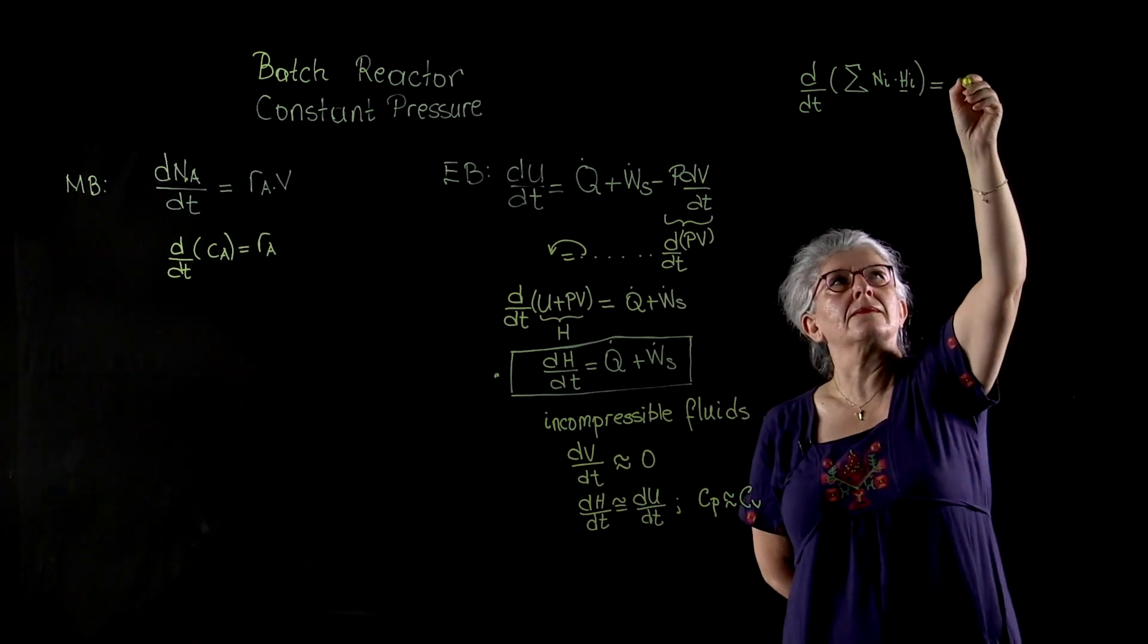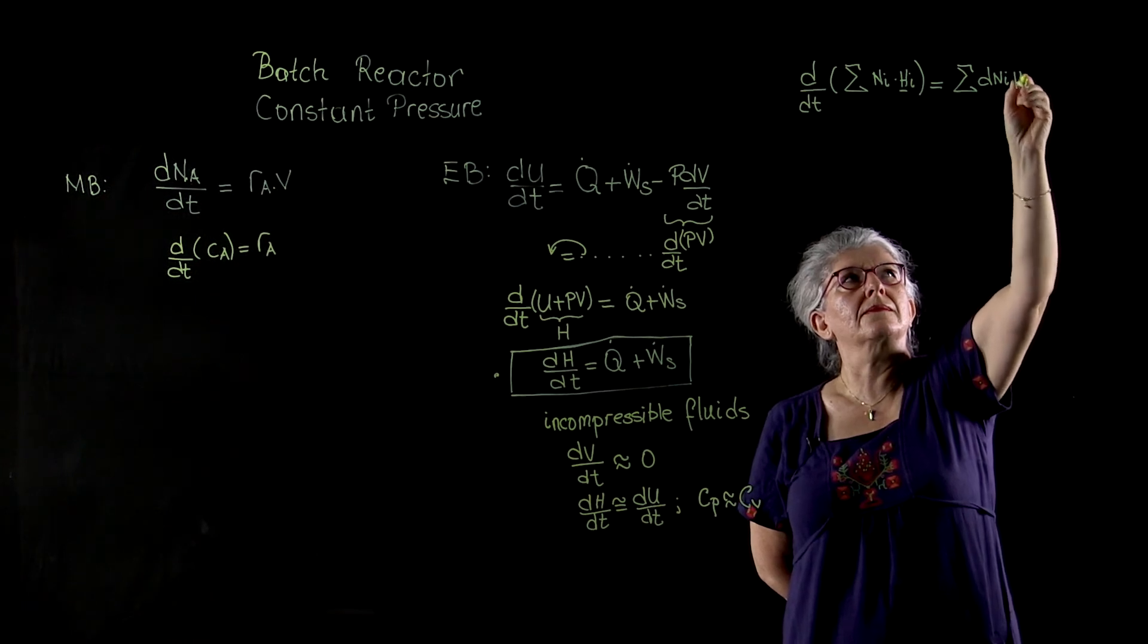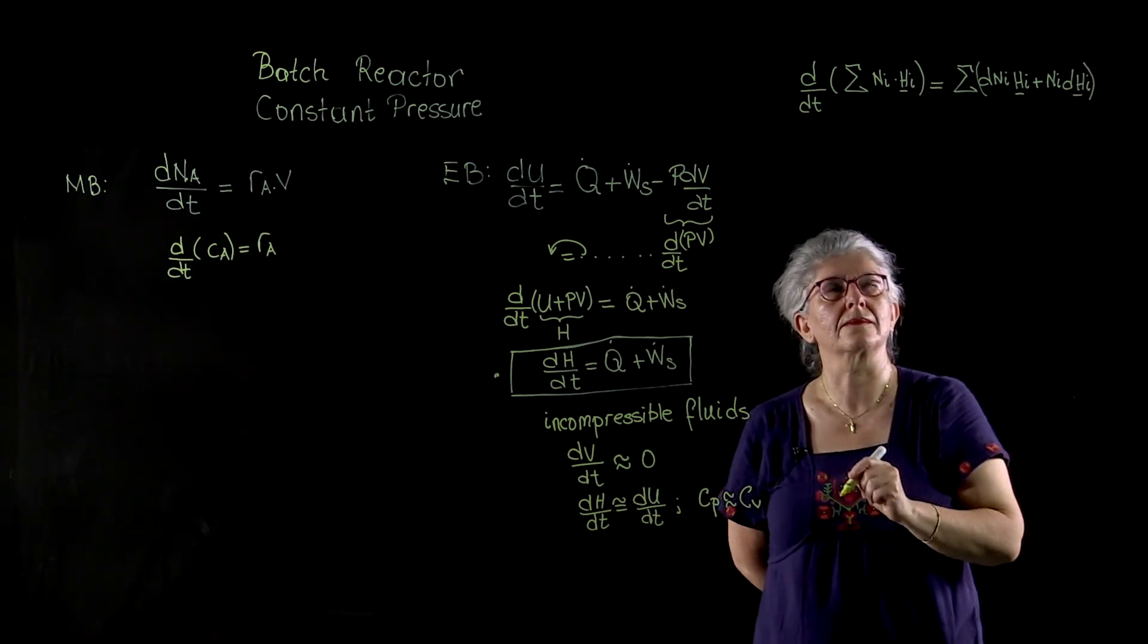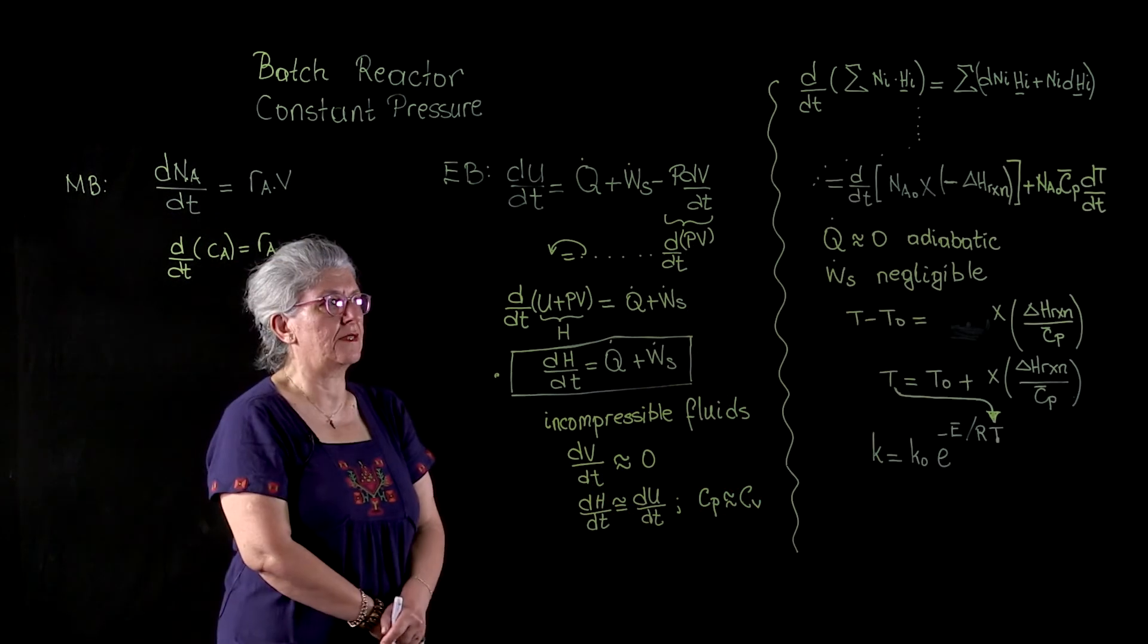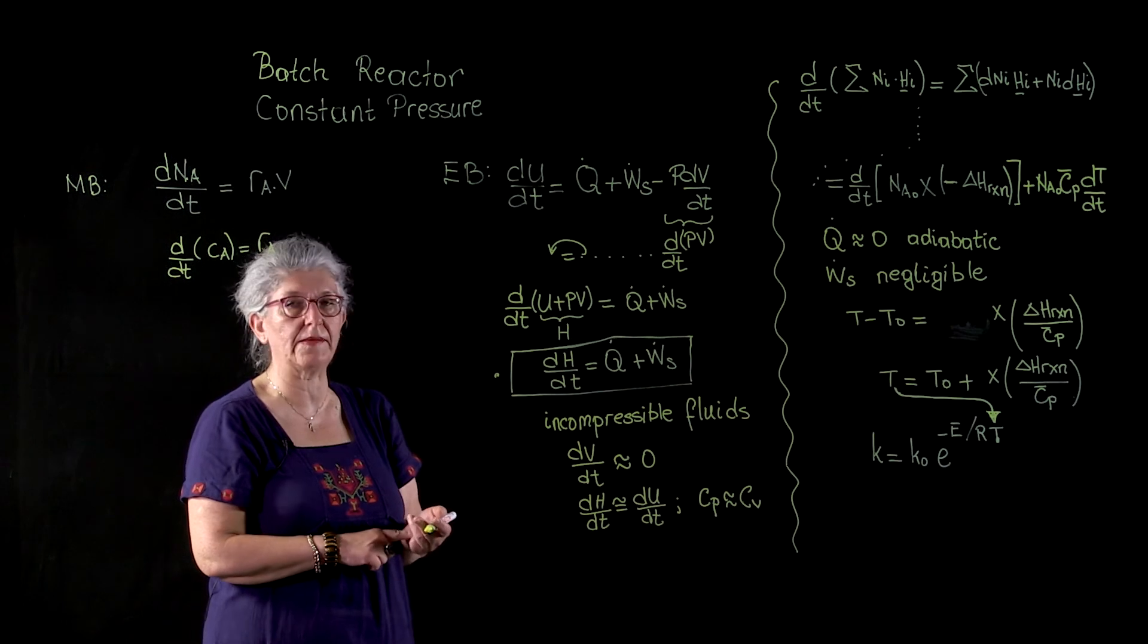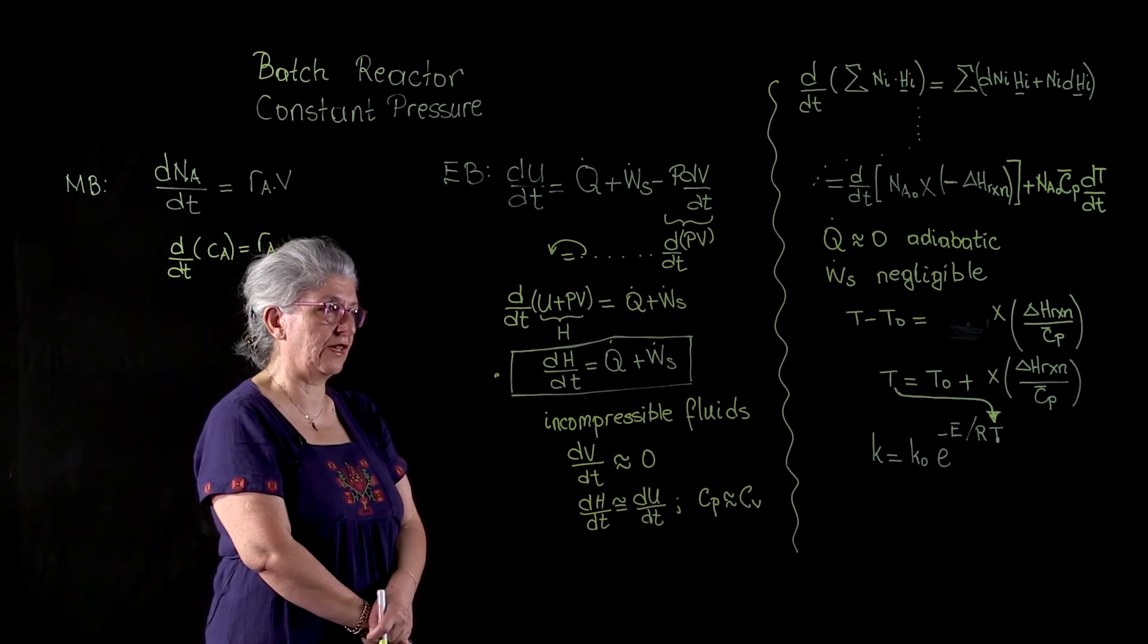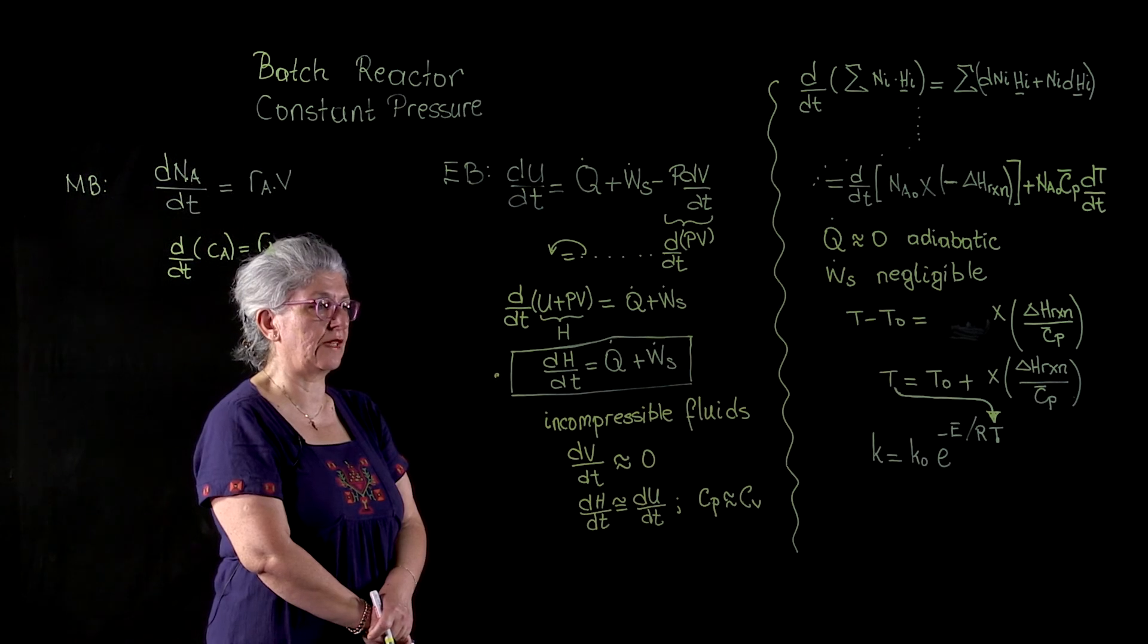It is constant. And obtain the final expression as we have done yesterday. So again, starting from the same expression, by the addition of the adiabatic constraints of an adiabatic reactor and negligible shaft work, we are able to derive the temperature change within the reactor as a function of conversion, enthalpy change of the reaction, and the mean heat capacity, mean feed heat capacity.